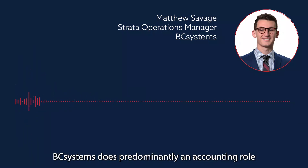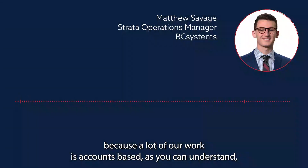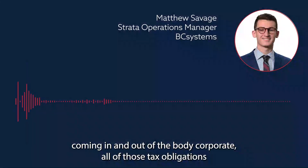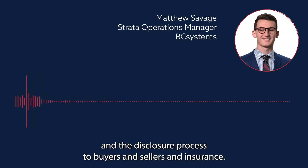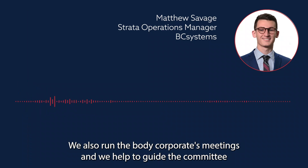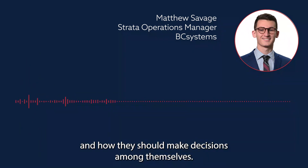BC Systems is predominantly an accounting role because a lot of our work is accounts-based. There are lots of payments coming in and out of the body corporate, including tax obligations, financials, audit, the disclosure process to buyers and sellers, and insurance. We also run the body corporate's meetings and help guide the committee as to what they should be doing, what they should be thinking about, and how they should make decisions among themselves.